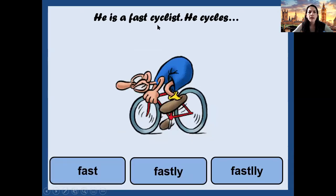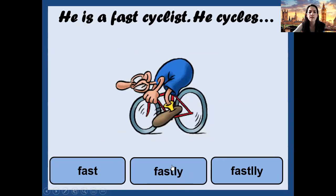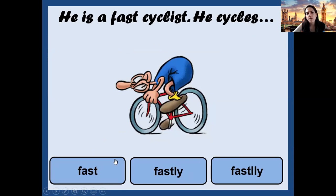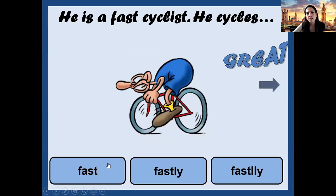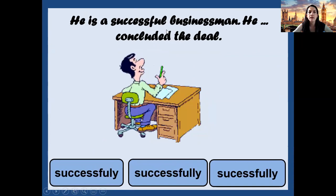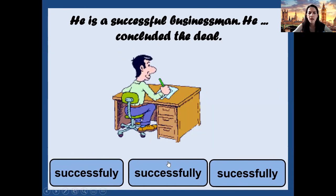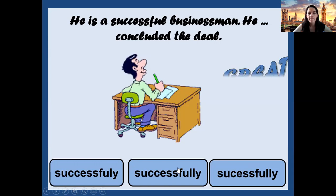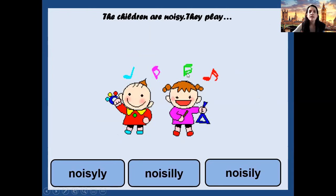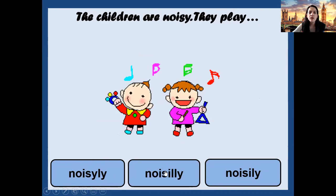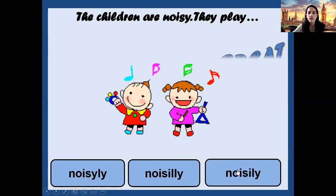Number six: 'He is a fast cyclist. He cycles fast, fastly, or fastly?' Remember, this is an exception — we say 'fast,' not 'fastly.' Number seven: 'He is a successful businessman. He concludes the deal successfully, successfully, or successfully?' Think — number one, two, or three? Yes — number two. Perfect. Number eight: 'The children are noisy. They play noisily, noisily, or noisily?' Yes — number three. Excellent!